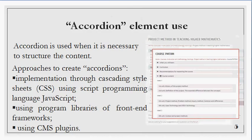The graphic interface element accordion is used when it is necessary to structure the content. It looks like a vertically or horizontally built set of elements that have a text mark or draft and a main part. Every element has two states: hidden or open. Usually, at a certain point, only one accordion element is active. It deactivates when you choose another element or double-click on the current element.